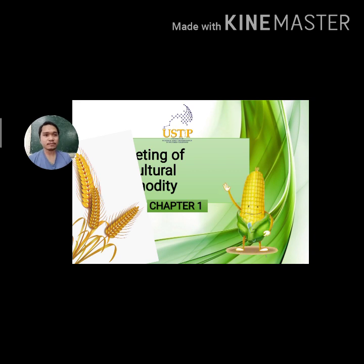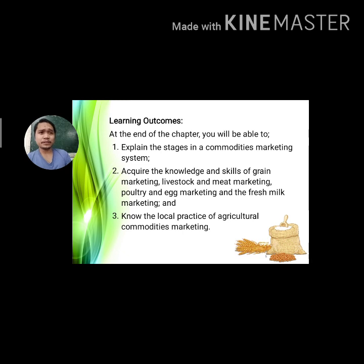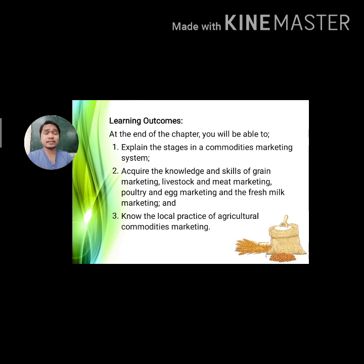We will now start on Chapter 1: Marketing of Agricultural Commodity. At the end of this chapter, you will be able to explain the stages in a commodities marketing system, acquire knowledge and skills of grain marketing, livestock and meat marketing, poultry and egg marketing, and fresh milk marketing, and know the local practice of agricultural commodities marketing.